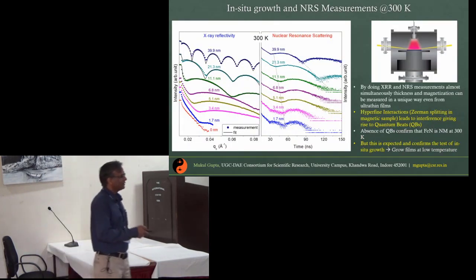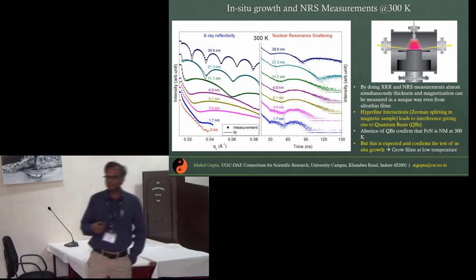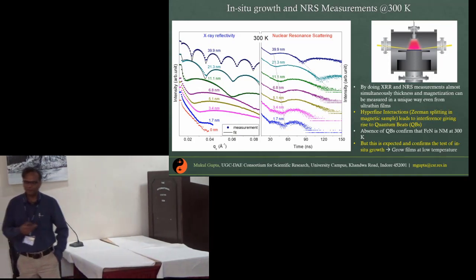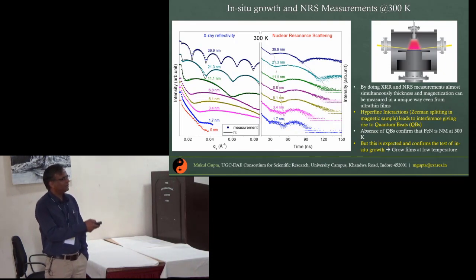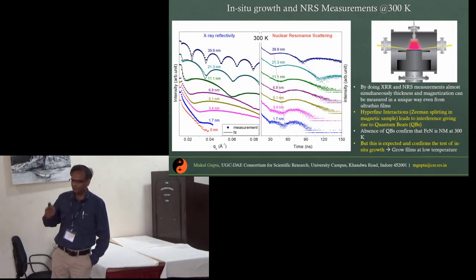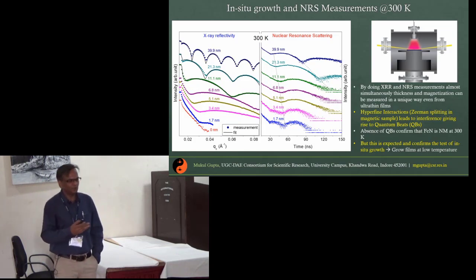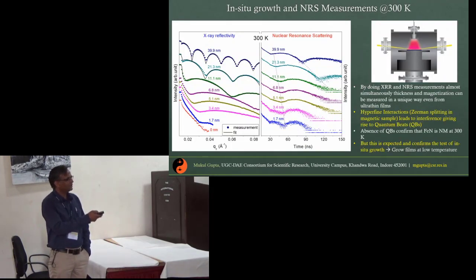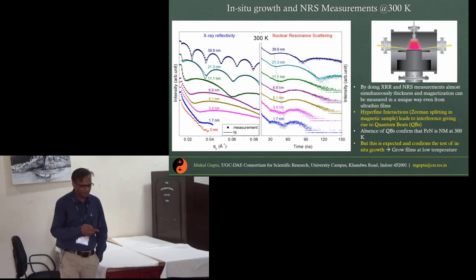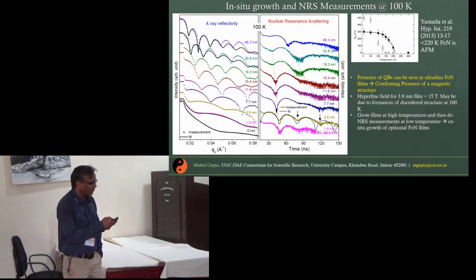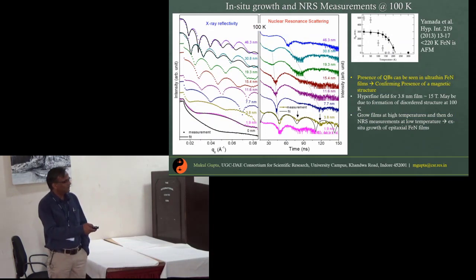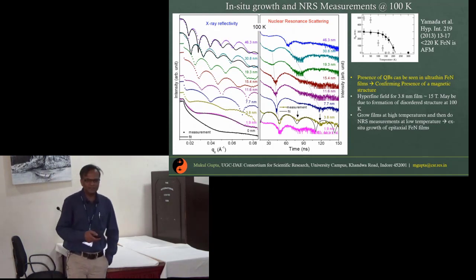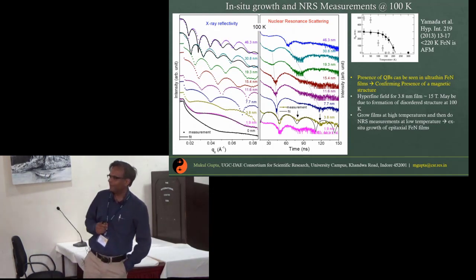Then we did nuclear resonance scattering measurements. Here the advantage is that you can also do X-ray reflectivity measurement which provides the thickness. This is almost like a featureless pattern. You do not see oscillations which are called quantum beats which come if there are hyperfine interactions present. At room temperature we would not expect it. When growth was done at room temperature we did not see any magnetism, but this was expected. But when we cool down to 100 K and do the growth, only for this very thin layer of 3.8 nanometer we could see well-defined oscillations corresponding to a hyperfine field of about 15 tesla.